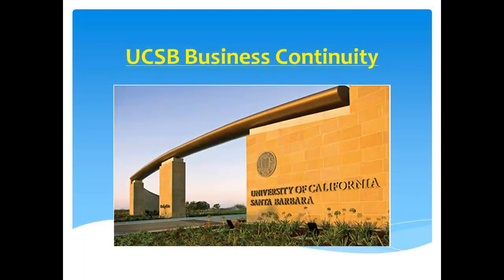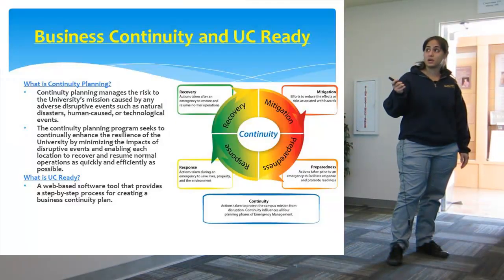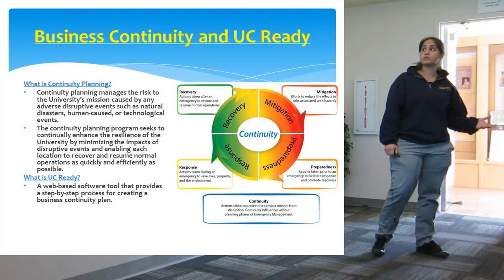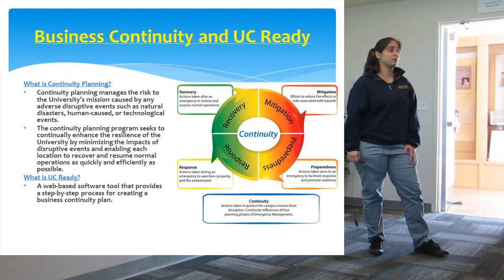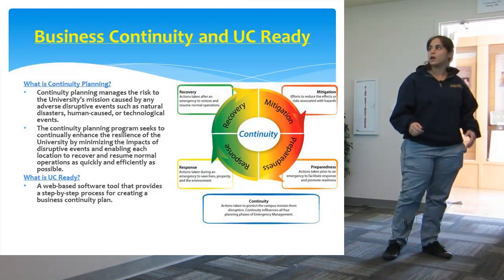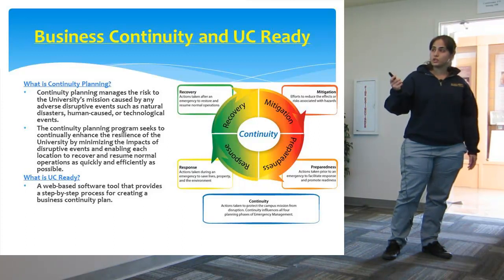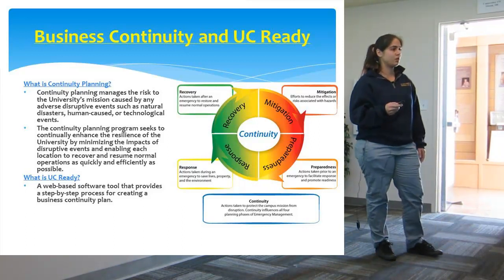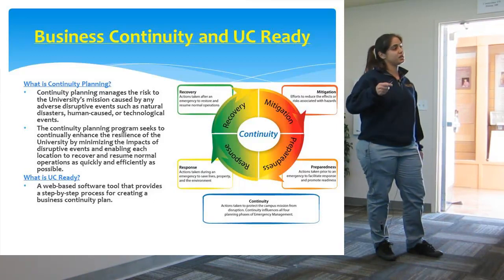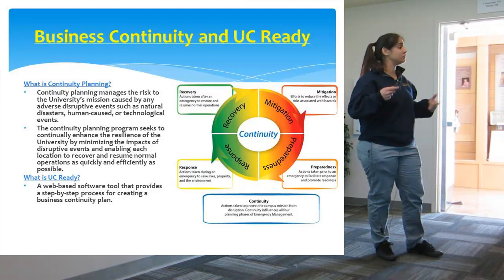My name is Amy and I'm the Business Continuity Coordinator here on campus. So what is continuity planning? Continuity planning manages the risk of a university's mission caused by any kind of disruptive event, from natural disasters to technological events. We do this by using UC Ready — a web-based tool that takes the user through a step-by-step process to create a continuity plan.